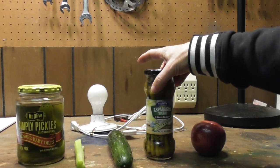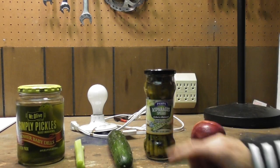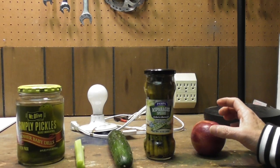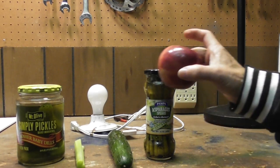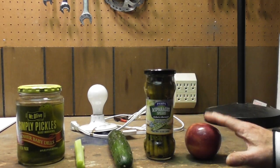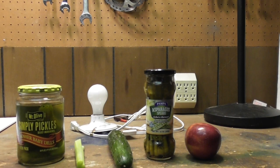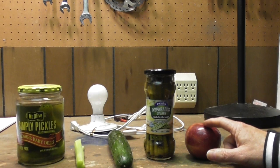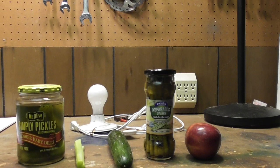We've got a cucumber because it's basically a pickle without being pickled. Some pickled asparagus. Feeling good about the pickled asparagus because of all the salt in it. And I know it's not a vegetable, but our friend the apple because, again, lots of water. And I'm feeling pretty good about the apple. So let's get started.